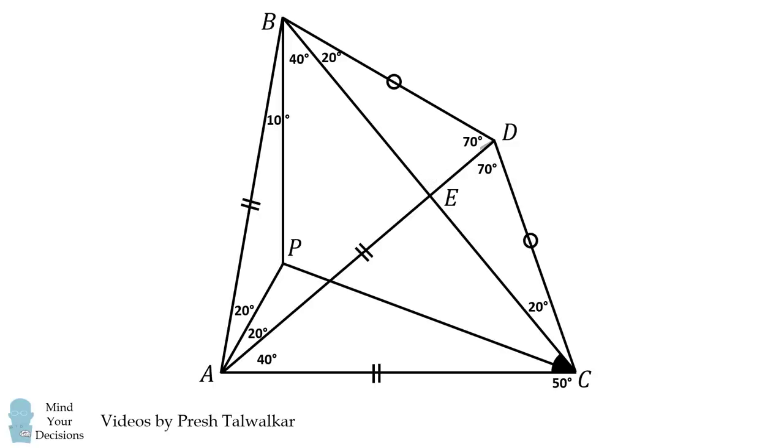We will then construct DP. What can we say now? Well, ABP and ADP are congruent triangles. Consequently, we must have that this angle here is 10 degrees, which means the other angle will be 60 degrees.